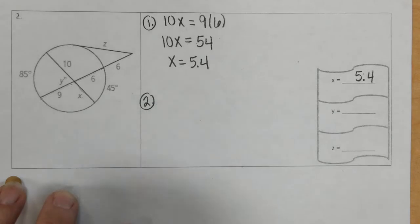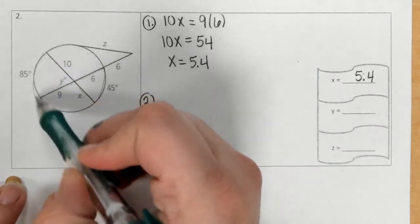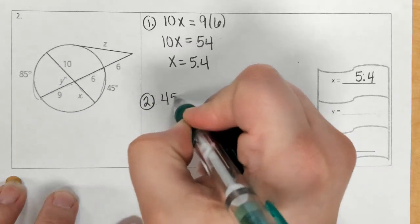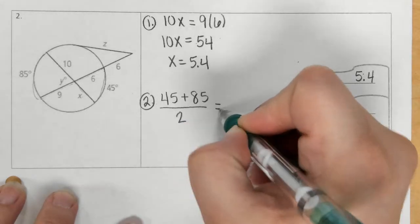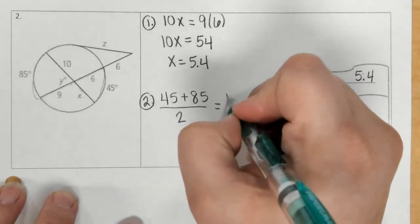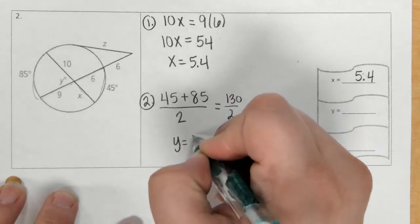For step 2, we need to add our arcs, so this arc plus this arc, 45 plus 85, divided by 2, equals 130 divided by 2, which is 65.